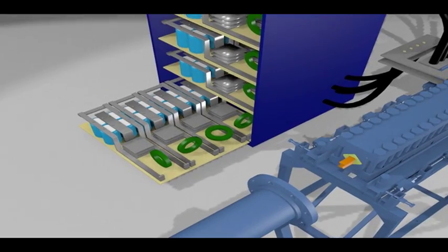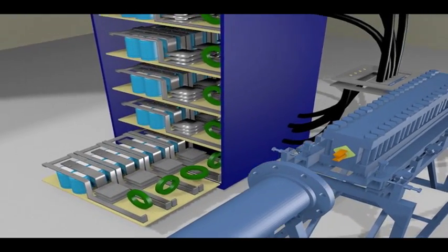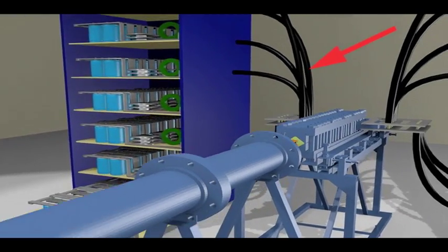Bus bars then connect the modules to the outside where the current is fed to the gun via the large black coaxial cables.